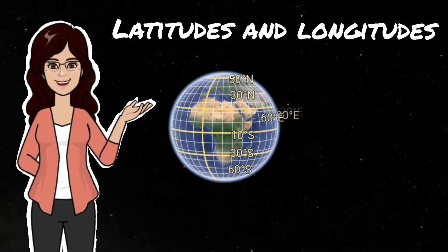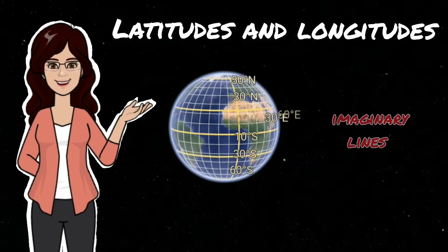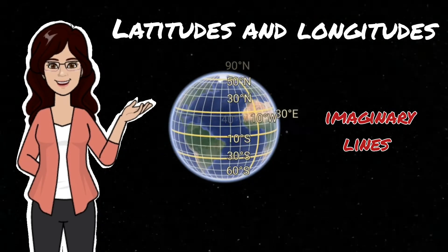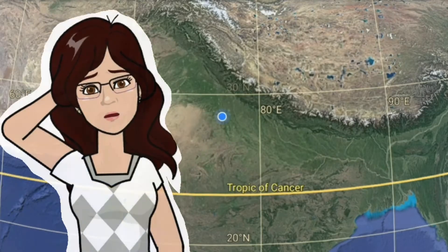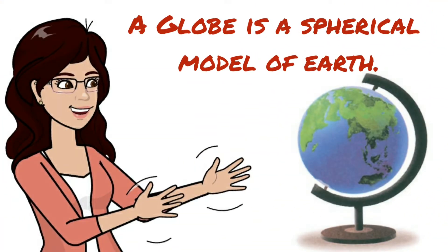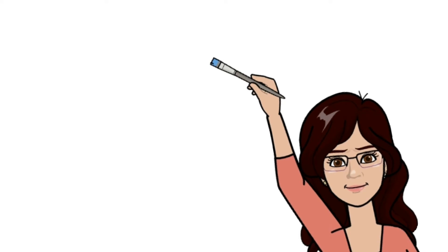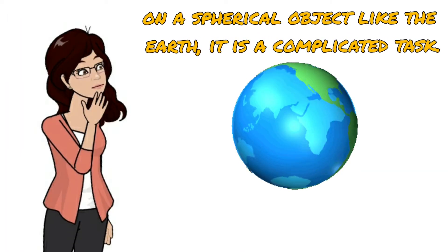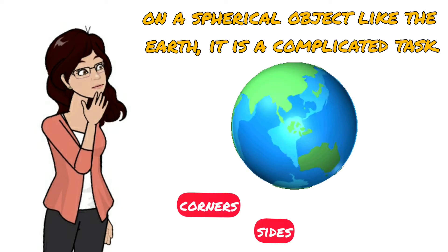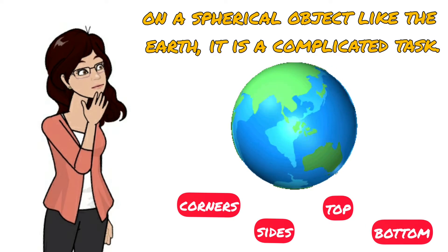Latitudes and longitudes are imaginary lines that help us to determine the location and the direction of any place on the globe. A globe is a spherical model of earth. Due to the spherical shape of the earth, it becomes very difficult to locate a place on it. We can easily locate a place on a flat surface with reference to another place, but on a spherical object like the earth which has neither corners and sides nor top and bottom, it is a complicated task.